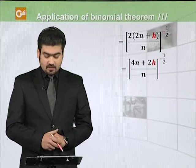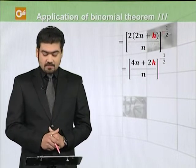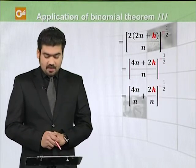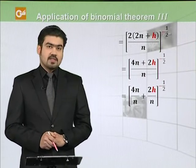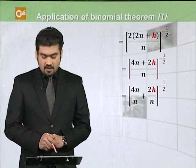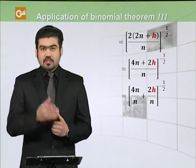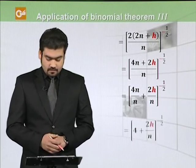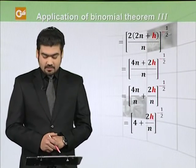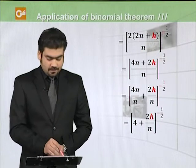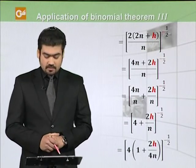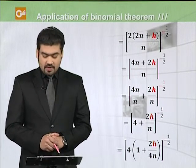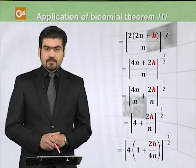This will be equal to (4n plus 2h) divided by n, raised to power 1 over 2. Next step mein n jo dono se multiply ho ga — so we get 4 plus 2h by n, whole raised to power minus 1 over 2. Now we take 4 common: 4 multiplied by (1 plus 2h over 4n), whole raised to power minus 1 over 2. This is the step where we apply the binomial expansion.